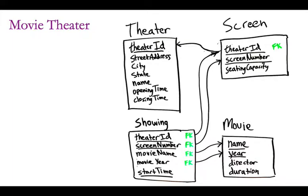The somewhat weird thing about this design is that there are a lot of composite primary keys. For example, screens are identified by screen number and theater ID. Screen number is just one, two, three, four — every theater has a screen one. But the combination of theater ID and screen number is unique, because within a theater the screen number doesn't repeat. So you have to use those two columns together to uniquely identify a screen. When you refer to it from elsewhere, you need both of those things.